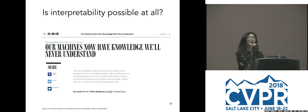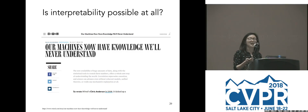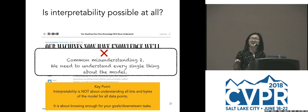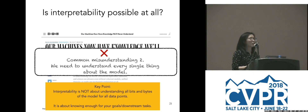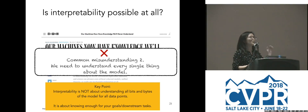You might also ask: what about models with huge superhuman performance, like AlphaGo? Maybe they're just too complex to understand at all — maybe interpretability is just impossible. Well, we don't need to understand every single bit and byte of a model to claim interpretability. It's about knowing enough to help your end task or achieve your goal. So what is 'enough'? It depends on what you're trying to achieve, depending on what your end task is. That is for you to decide.